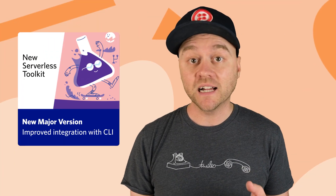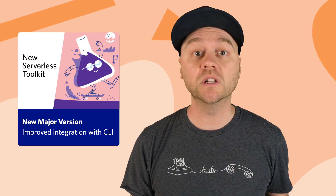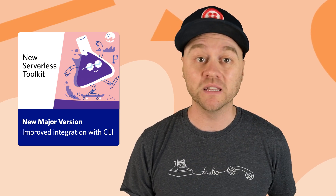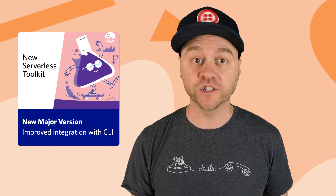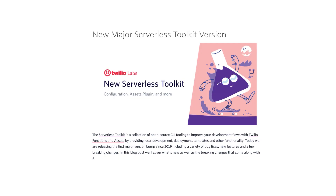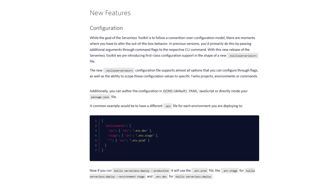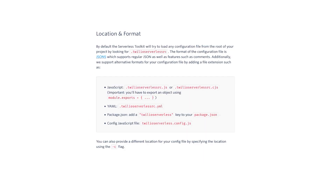The Serverless Toolkit is CLI tooling to help you develop locally and deploy to the Twilio Runtime. I find it to be the most convenient way to work on Twilio Functions code. The Serverless Toolkit team has released a new major version with some pretty exciting features. First, there's a new way to specify configuration options. In the past, you had to pass config parameters via CLI flags. The new .twilio-serverless-rc file supports almost every configuration option, and you can author it in JSON5, YAML, JavaScript, or directly inside your package.json file.